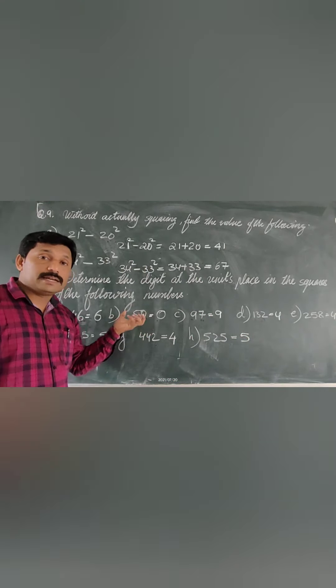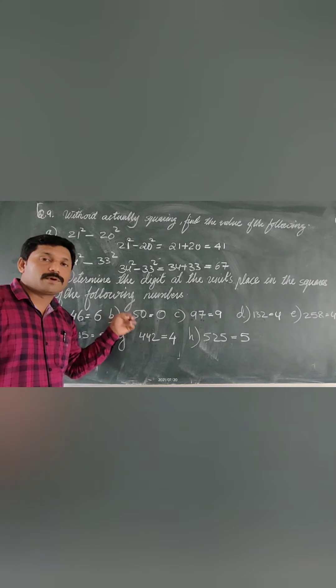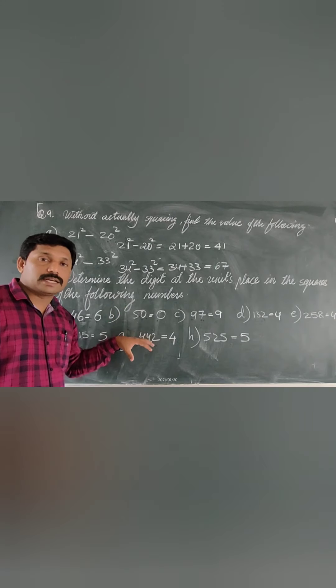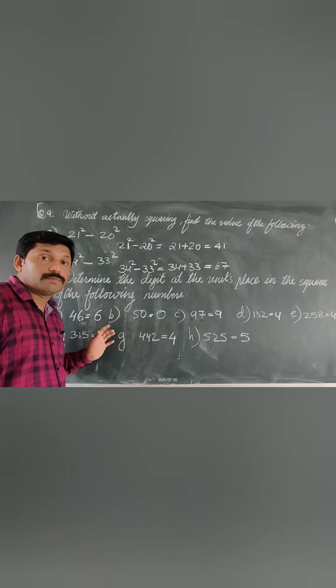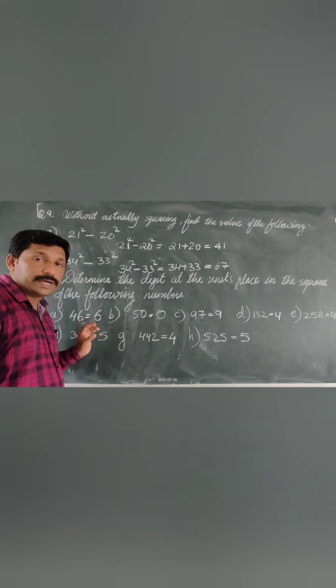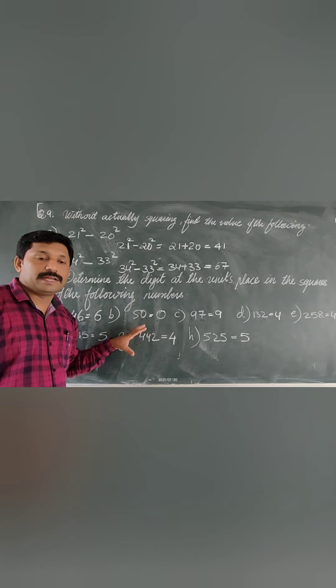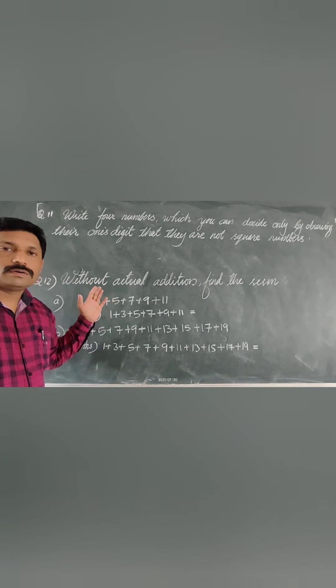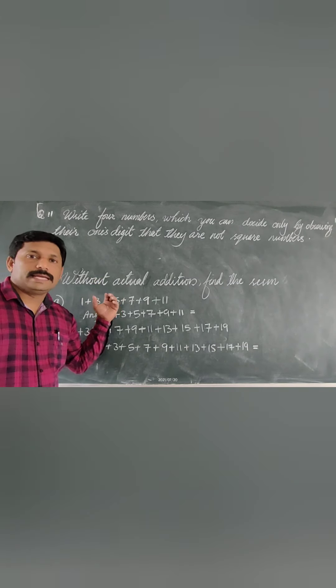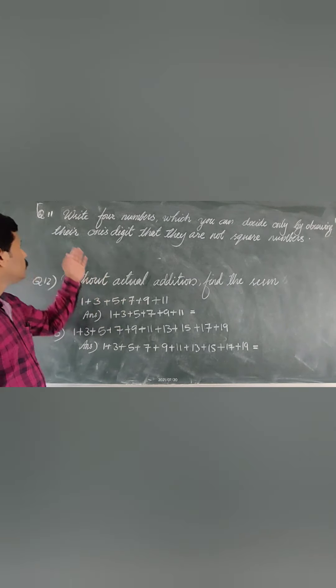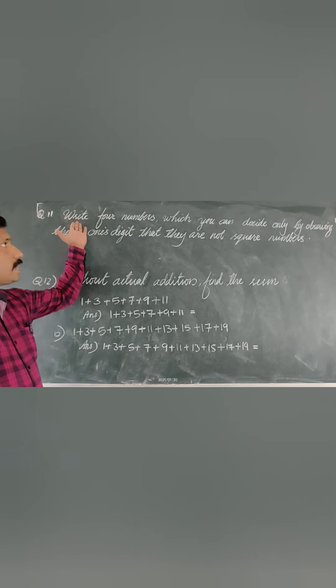We don't need to find the squares of these numbers to determine the unit place. According to the property, those who have learned the property can directly say what is the unit digit of the square of any given number. That property table everyone should memorize.